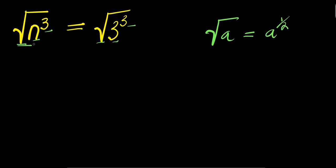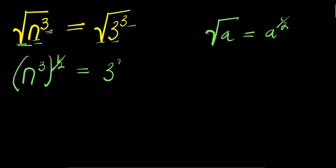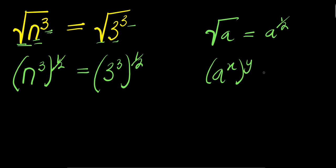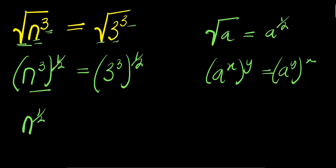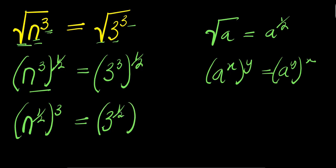So square root of n to the power 3 equals n to the power 3 raised to the power of 1 over 2, and this equals 3 to the power 3 raised to the power of 1 over 2.